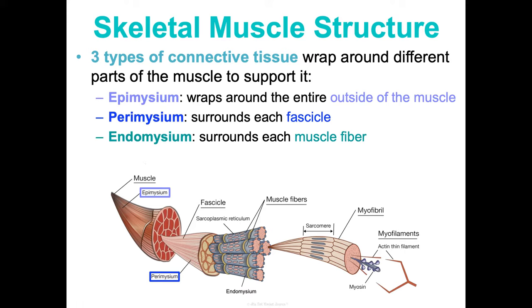Big picture: how can muscles increase the force of their contraction? Three ways: first, increase the frequency of motor neuron stimulation — stimulate motor units more frequently so sarcomeres can't relax and stay contracted. Second, increase the number of motor units and thus the number of muscle fibers being stimulated. Third, increase the size of the muscle fibers — bulkier muscles resulting from regular resistance training can build up more tension in the muscle fiber.